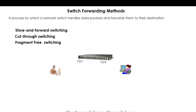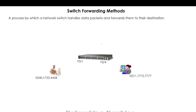In this video we are going to discuss switch forwarding methods. I have illustrated a switch here - this user is connected with FA0/1 port and this user is connected with FA0/4 port. The switch handles these packets when one user wants to forward them to some other destination. There are multiple switch forwarding methods: store and forward switching, cut-through switching, and fragment free switching.